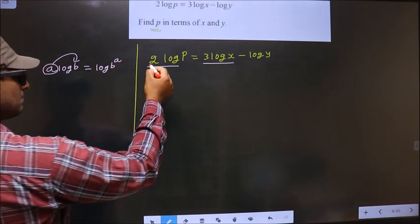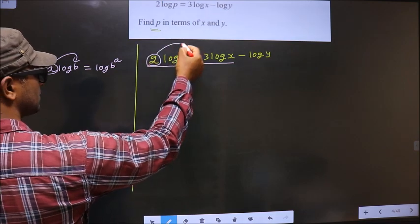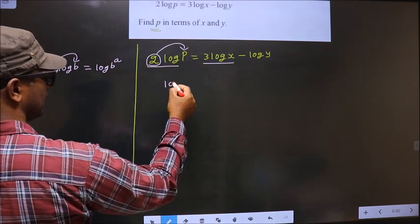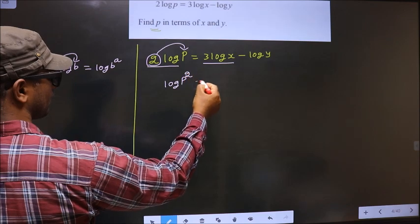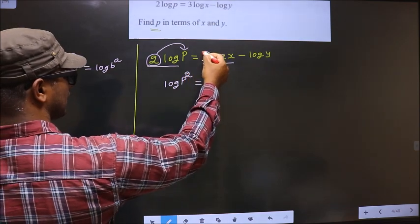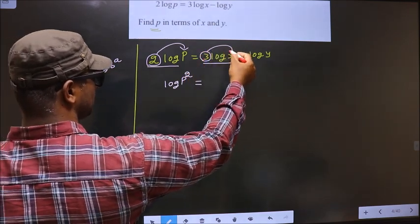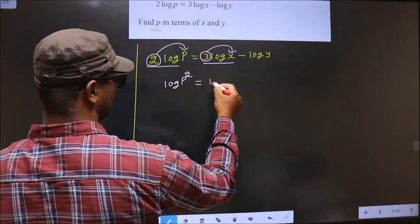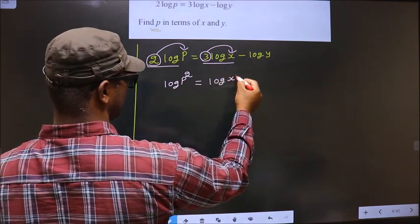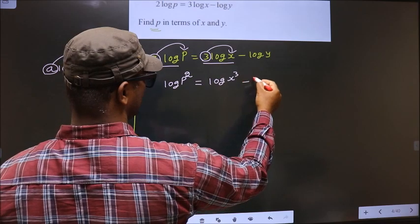So here the number is 2. It will go as the power making it log p power 2 equal to. Here also the number is 3. It will go as the power making it log x power 3 and here no change.